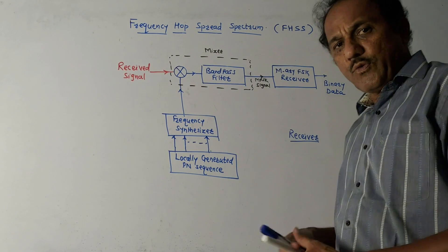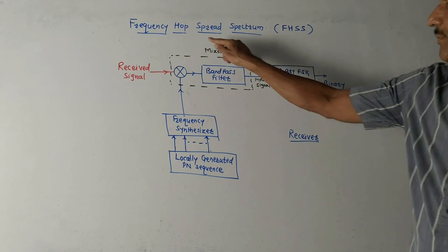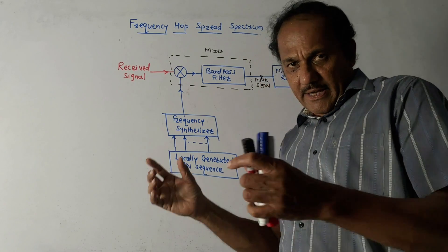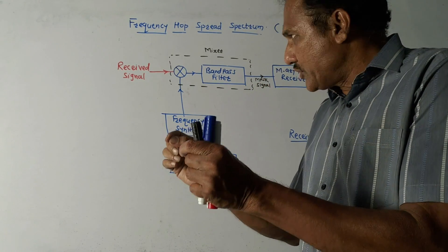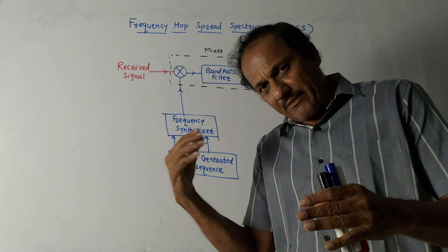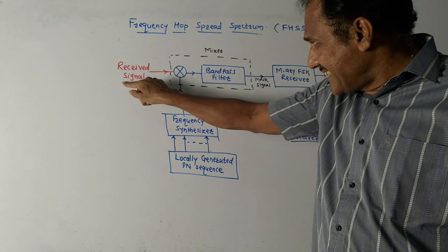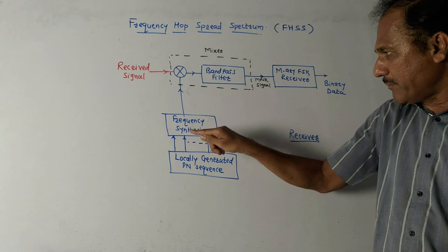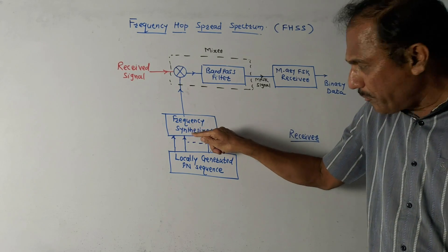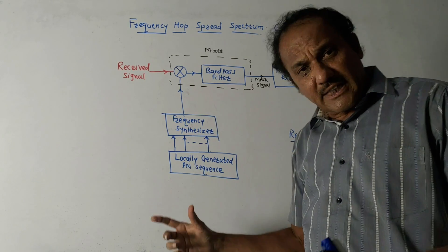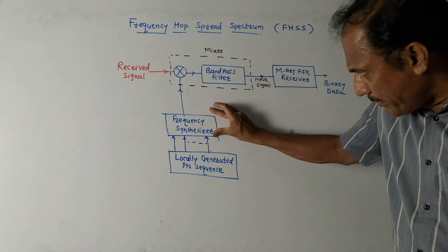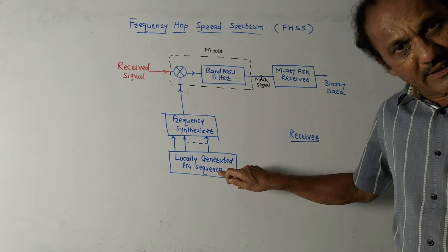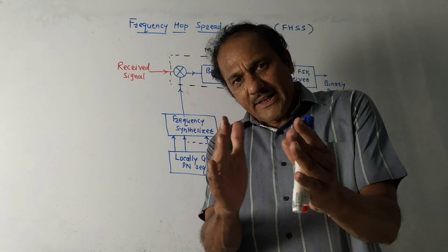This diagram is for the receiver section of Frequency Hop Spread Spectrum. The received signal, which is in terms of different frequency hops and different frequency slots, is applied to a multiplier. Another input to the multiplier is the output of the frequency synthesizer, which is controlled by the PN sequence generator — similar to the transmitter section.